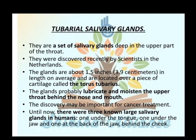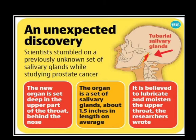Next discovery: a new salivary gland was found. This gland probably lubricates and moisturizes the upper throat, nose, and mouth. The discovery is important because it can help in the treatment of cancer. Until now, there were three known large salivary glands in humans — one under the tongue, the second under the jaw, and the third behind the cheek. The new gland is called the tuberial salivary gland, approximately 1.5 inches in length, located in the upper throat.